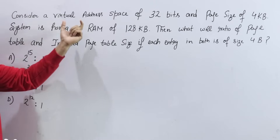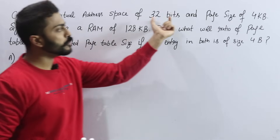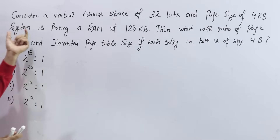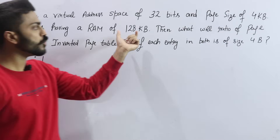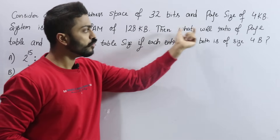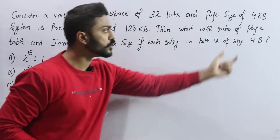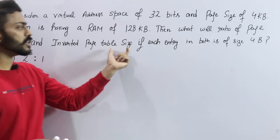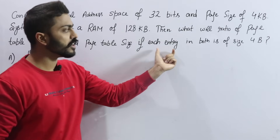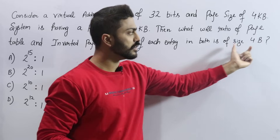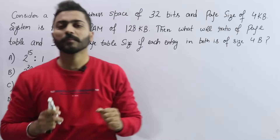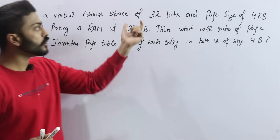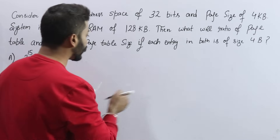Consider a virtual address space of 32 bits and page size of 4 KB. The system has a RAM of 128 KB. What will be the ratio of page table and inverted page table size if each entry in both is of size 4 bytes? So here we have given virtual address space that is 32 bits.